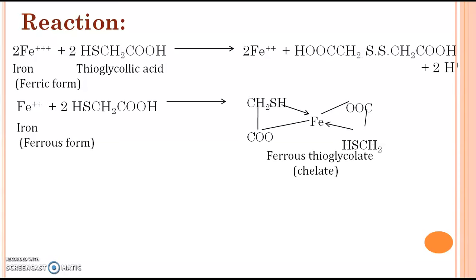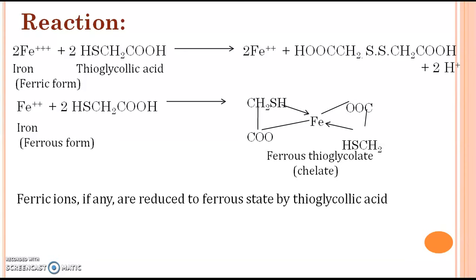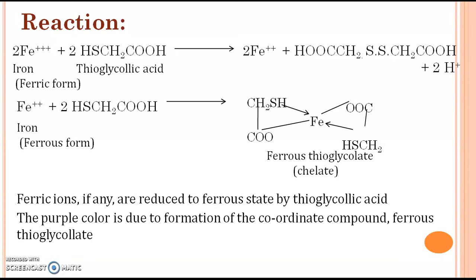A commonly asked question is: write the role of thioglycolic acid in the limit test for iron. The first role of thioglycolic acid is the conversion of the ferric form into the ferrous form. The second role is the formation of a purple color by the coordinate compound ferrous thioglycolate.